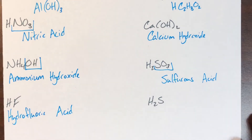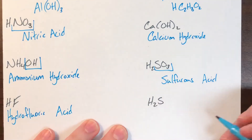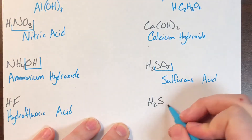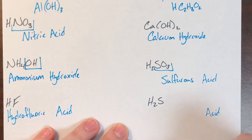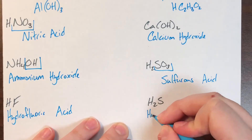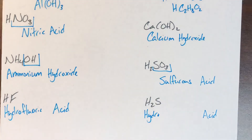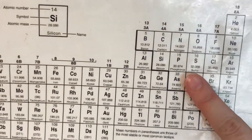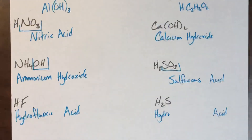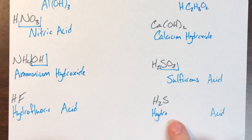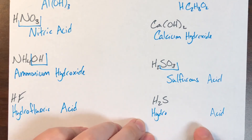Last problem: H₂S. I'm leading with H, so I know this is going to be an acid. S is not a polyatomic ion, so I have to start with 'hydro.' S is sulfur. The same place you would change the ending to '-ide,' you change it to '-ic.' So this will be hydrosulfuric acid.